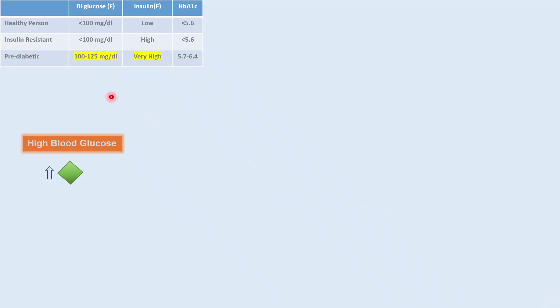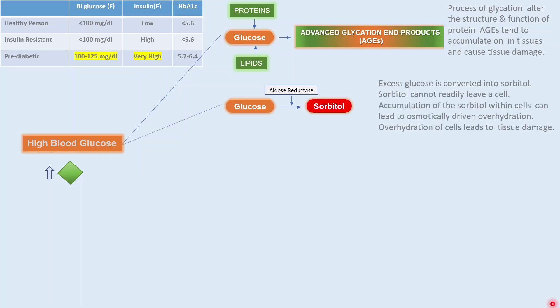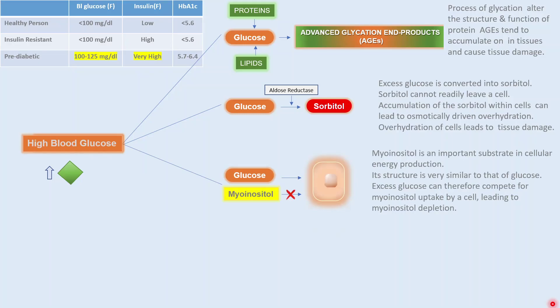In the pre-diabetic stage, blood glucose level is high and insulin is high. Glucose binds to proteins or lipids to form advanced glycation end products (AGEs). The process of glycation alters the structure and function of proteins. AGEs tend to accumulate in tissues and various organs — for example, they accumulate in the kidney and damage it, they may accumulate in the lens of the eye causing cataract, and they get deposited in blood vessels causing atherosclerosis. Excess glucose in the blood is also converted to sorbitol. Sorbitol cannot readily leave the cell; its accumulation causes osmotically driven over-hydration of the cells, leading to tissue damage. Similarly, myo-inositol is important for cellular energy production and its structure is very similar to glucose, so excess glucose competes with myo-inositol uptake by the cell, leading to myo-inositol depletion.